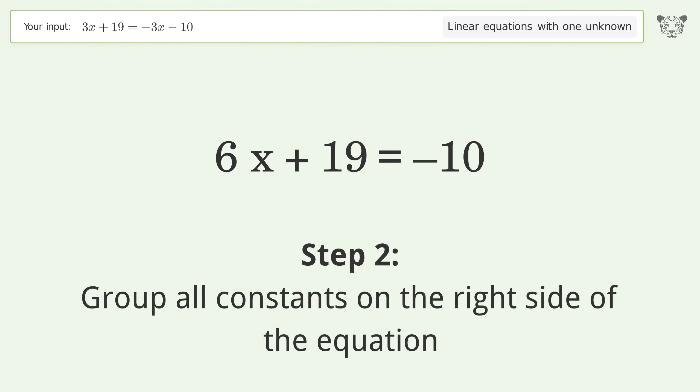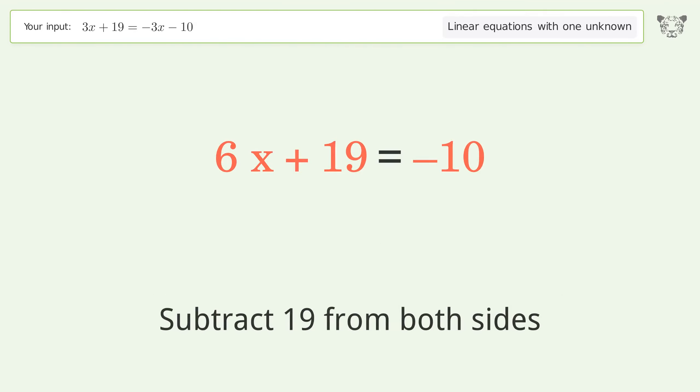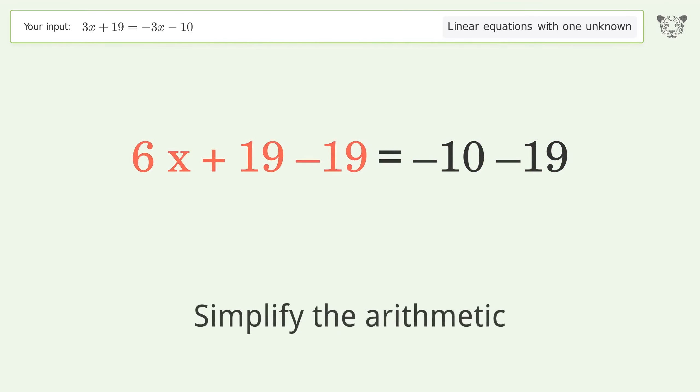Group all constants on the right side of the equation. Subtract 19 from both sides. Simplify the arithmetic.